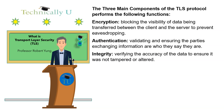The three main components of the TLS protocol perform the following functions. Encryption: blocking the visibility of data being transferred between the client and the server to prevent eavesdropping. Authentication: validating and ensuring the parties exchanging information are who they say they are. Integrity: verifying the accuracy of the data to ensure it was not tampered or altered.